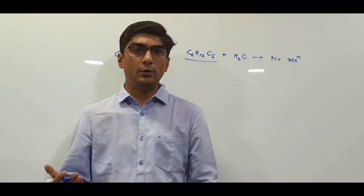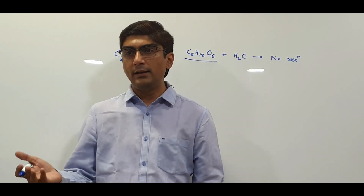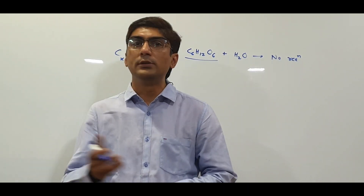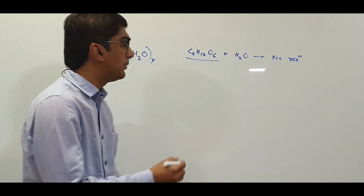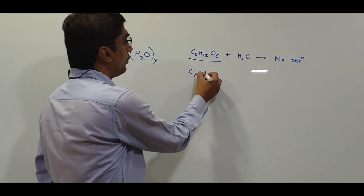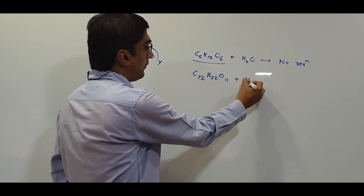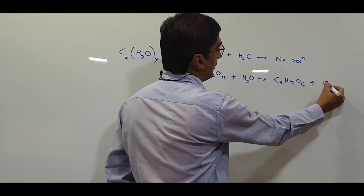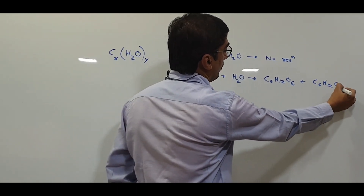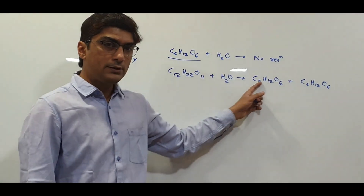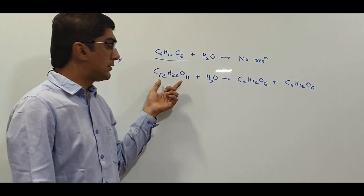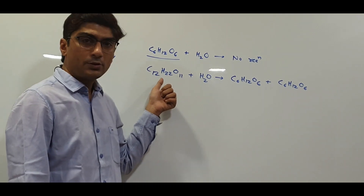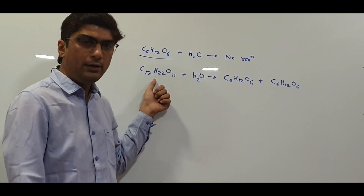The other classification would be oligosaccharides. Oligosaccharides are carbohydrate molecules from which, on hydrolysis, we can form 2 to 9 monosaccharide molecules. For example, sucrose: C12H22O11 plus water gives C6H12O6 plus C6H12O6 — one molecule of glucose and another of fructose. So when sucrose is hydrolyzed we get 2 monosaccharide molecules, making sucrose an oligosaccharide or a disaccharide.